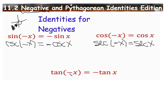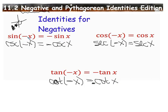Moving on to tangent: the tangent of a negative angle works the same way as sine does — it becomes negative tangent of the positive angle. The same identity applies to cotangent, the reciprocal function. So to summarize: sine of a negative angle rewrites as negative sine of x, cosine of a negative angle rewrites as cosine of x, and tangent of a negative angle rewrites as negative tangent of x.